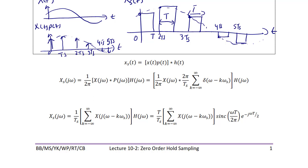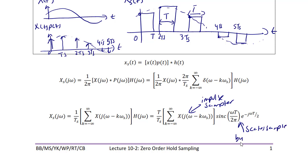Using algebra to simplify, XS(jω) equals (1/TS) times the summation over K of X(j(ω minus K·ωS)) times H(jω), which equals (T/TS) times the summation over K of X(j(ω minus K·ωS)) times sinc(ωT / 2π) times e to the negative jωT over 2. Part of this is the same as the impulse sampler, and the sinc term scales each sample as a function of ω.